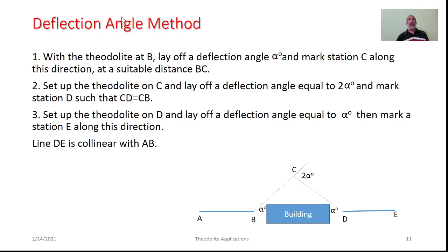In the deflection angle method, with the theodolite at station B, lay off angle alpha and mark station C at a suitable distance BC. Occupy station C, lay off a deflection angle of 2·alpha, and mark station D such that BC = CD. Then set the equipment at station D, lay off deflection angle alpha, and mark station E in line with AB.